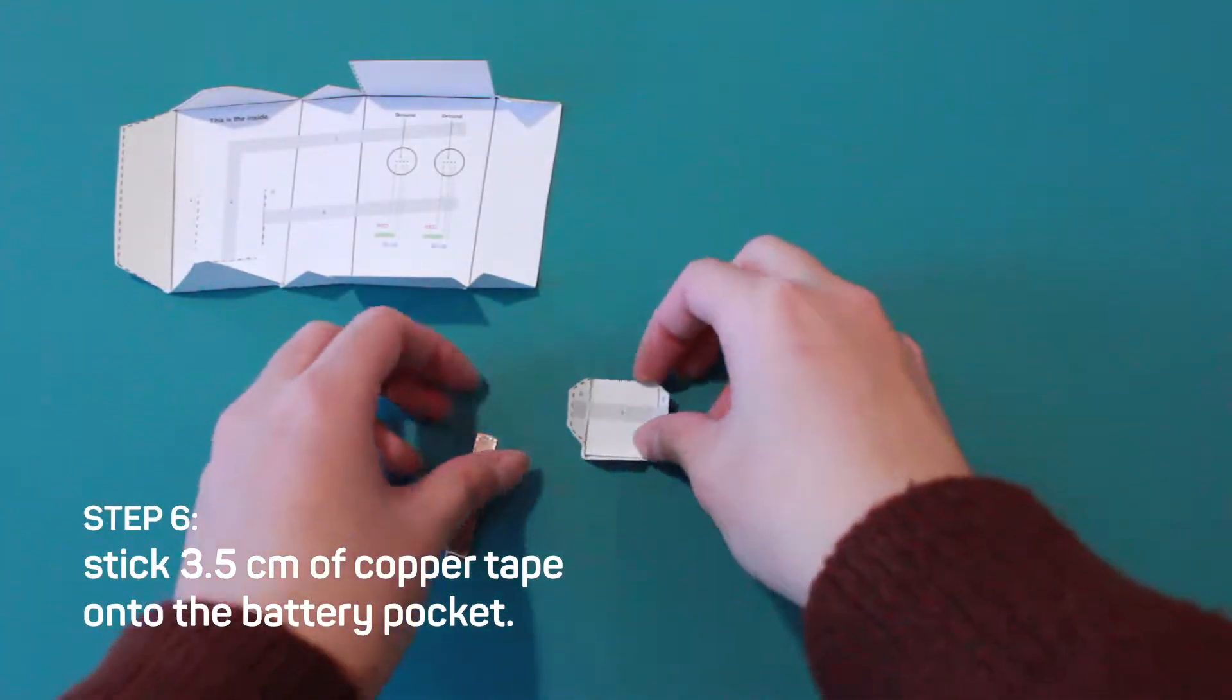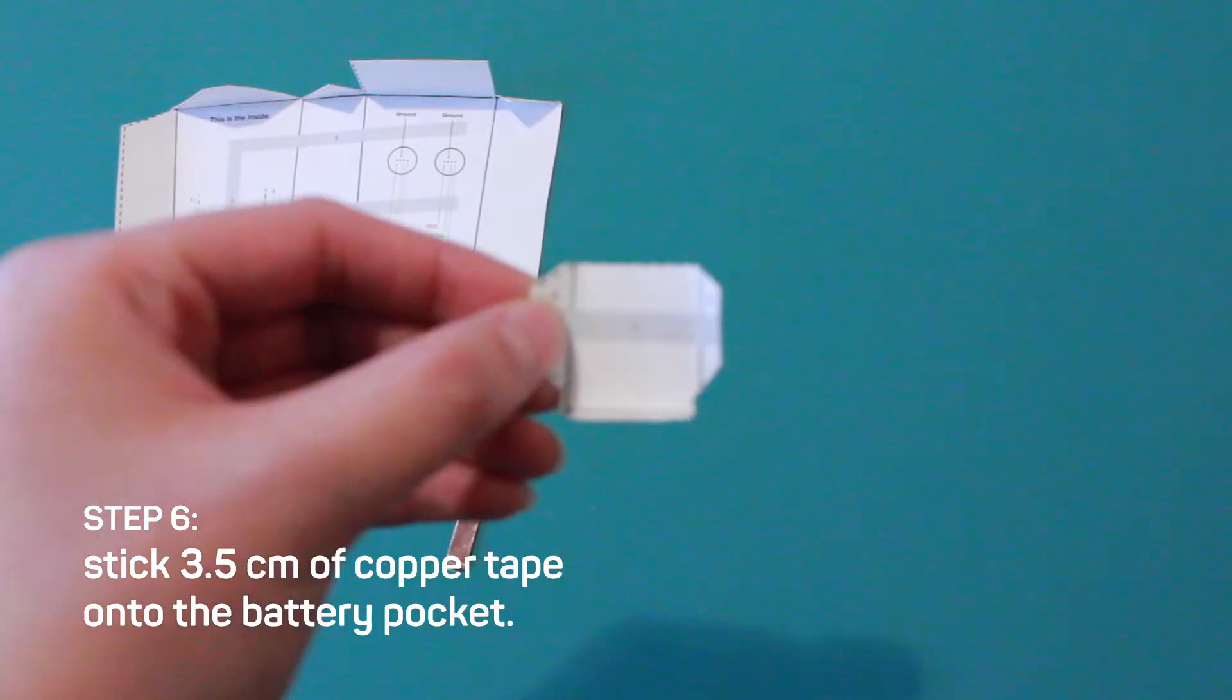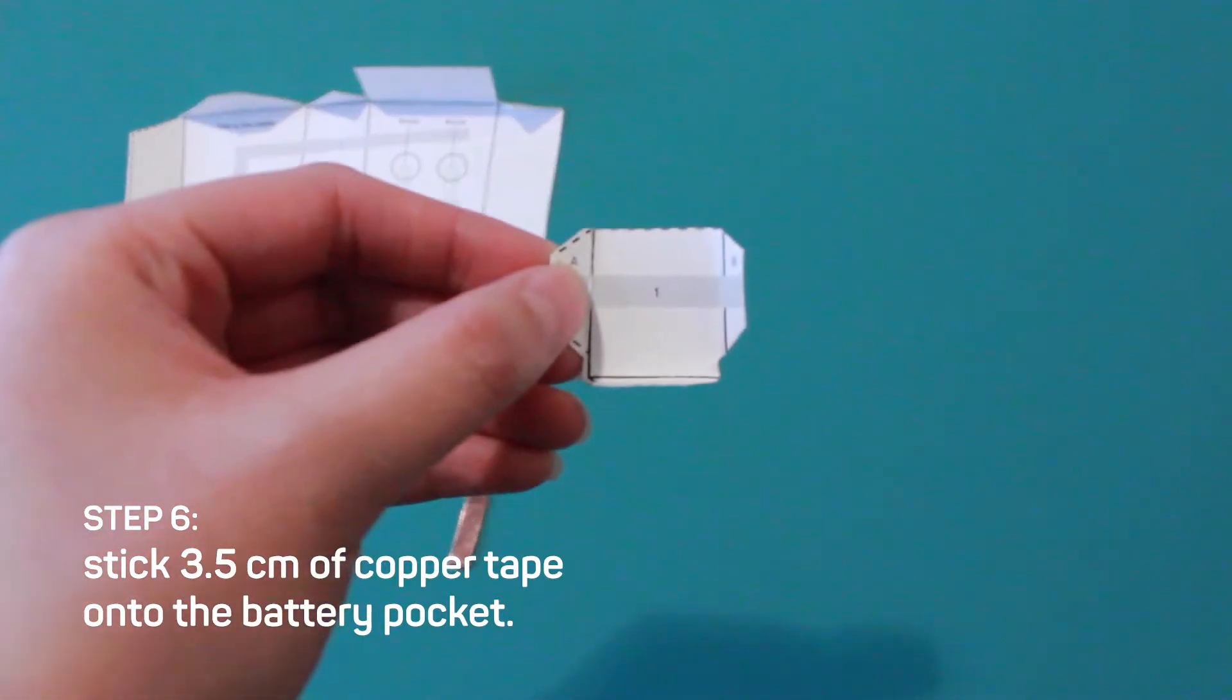Step six, stick three and a half centimeters of copper tape onto your battery pocket. Make sure you follow the gray lines.